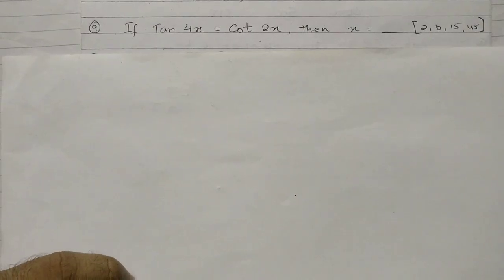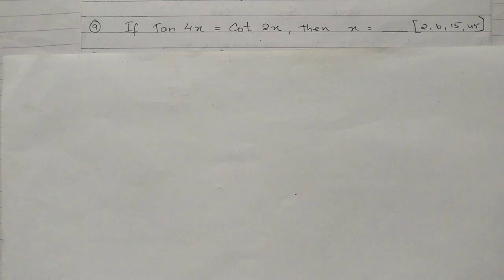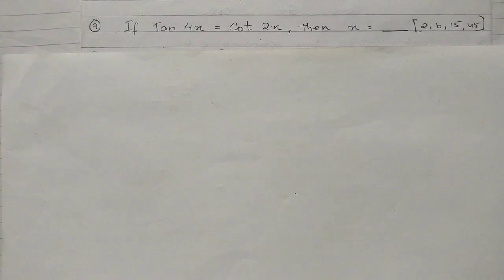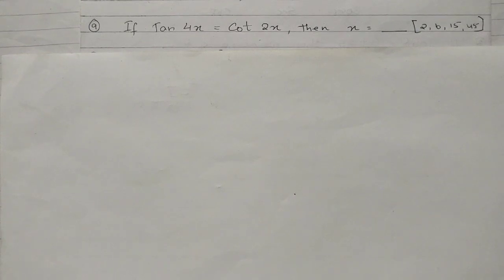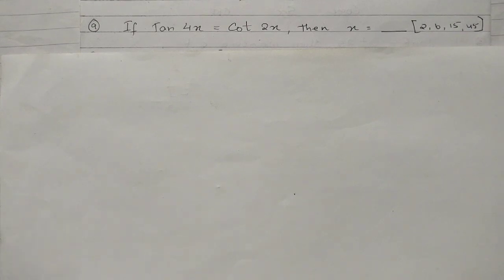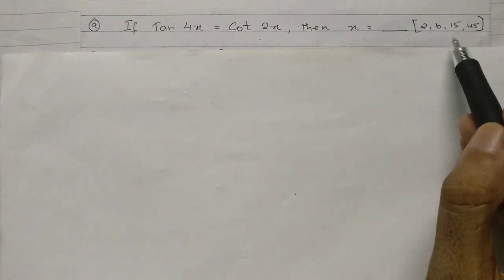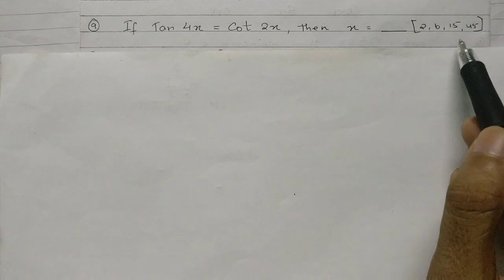Question 9 is similar to question 6. If tan 4x equals cot 2x, then the value of x is dash. Options are 2, 6, 15, and 45. Change either tan or cot in terms of its complement, subtract from 90, take the same terms to one side, add them, divide, and get the value of x.